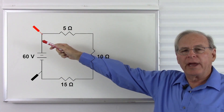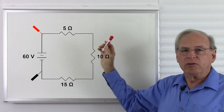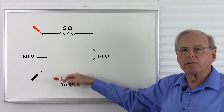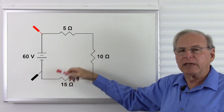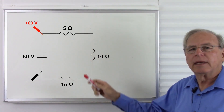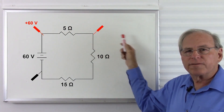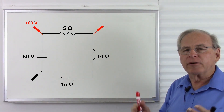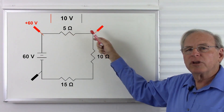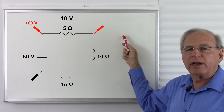If we put the red lead on the positive terminal of the battery and the black lead on the negative terminal, positive is greater than negative, so we get a positive reading — we will see positive 60 volts. Now let's move the red lead over across the 5 ohm resistor. We already determined there is 10 volts across it, positive to negative, so we lose 10 volts from one side to the other. By the time we get here, we are down to 50 volts — our meter will read positive 50 volts.